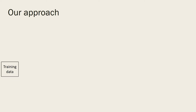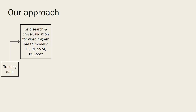What we first did for the early word testing phase is that we did a very extensive grid search and cross-validation for word n-gram based models, which were regularized logistic regressions, random forest models, support vector machine classifiers, and XGBoost classifiers. Once we did the grid search and cross-validation, we chose the hyperparameters and the model that performed the best and trained that model on the entire training dataset, uploading it as our early bird testing software.